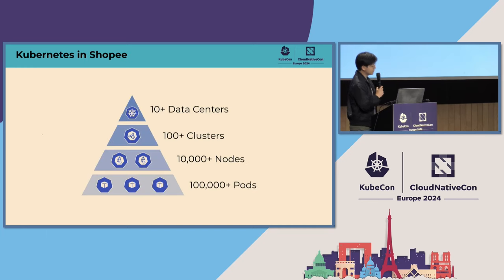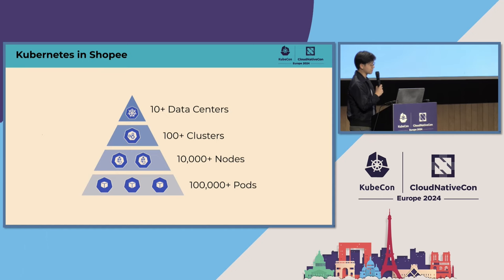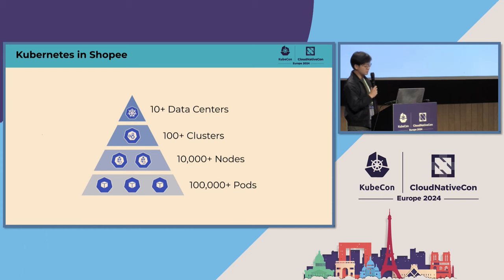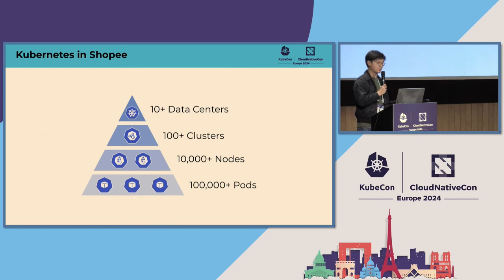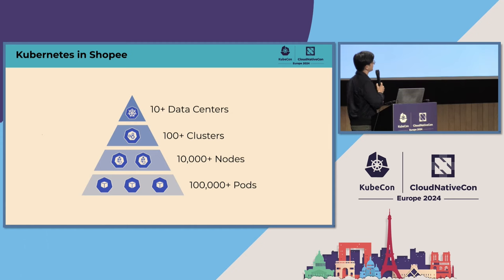In Shopee, we've used Kubernetes to manage and orchestrate large numbers of pods that power the backend systems behind Shopee. Today we have over 100,000 pods running across tens of thousands of nodes distributed across multiple data centers worldwide, and we expect these numbers will continue growing as the company grows in the years to come.